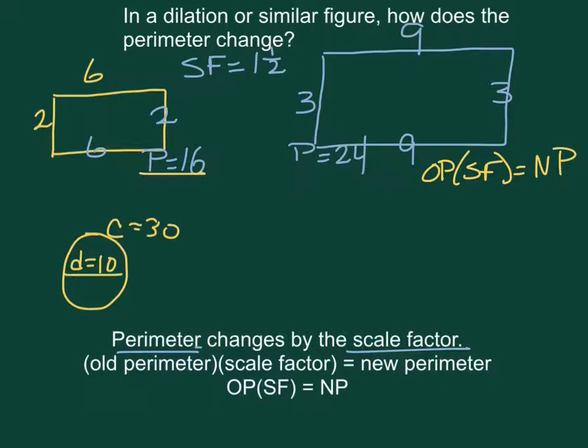So let's try that out. Our old perimeter was 16. Our scale factor was 1.5. 16 times 1.5 is 24 and that was our new perimeter.